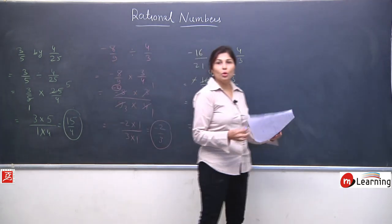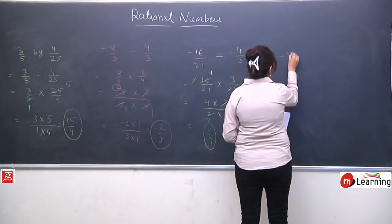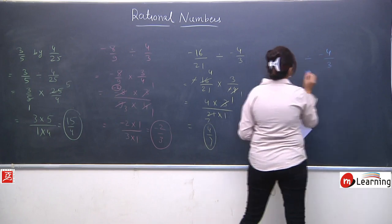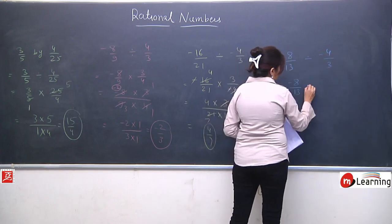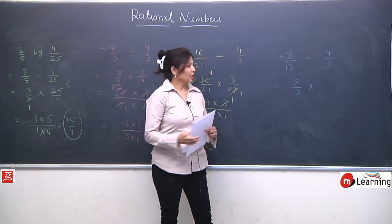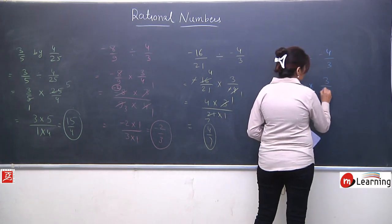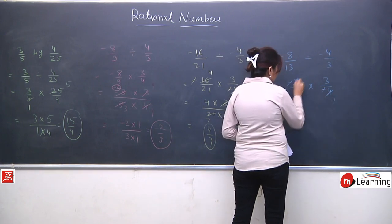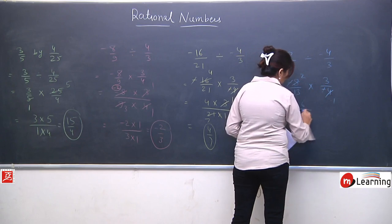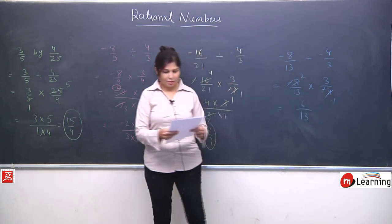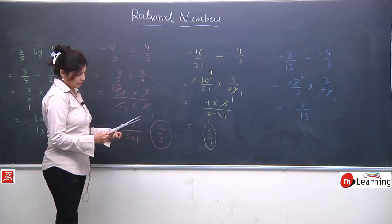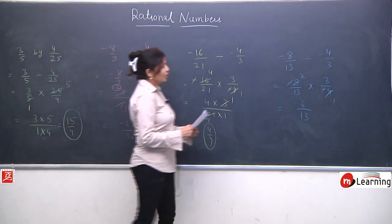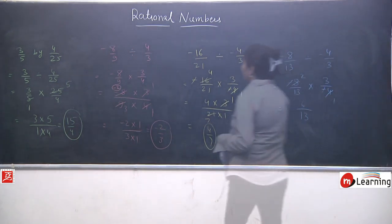Last question: jab dono rational numbers negative hain — -8/13 divided by -4/3. Divide converts to multiplication, reciprocate -4/3 to get 3/-4. Minus minus cancel. 4 ones are 4, 4 twos are 8. 3 twos are 6 upon 13. Your answer is 6/13. These are very very simple questions — students, we have practiced a lot.